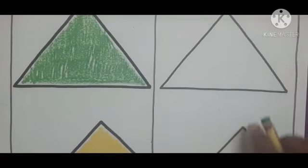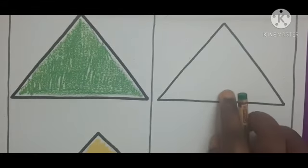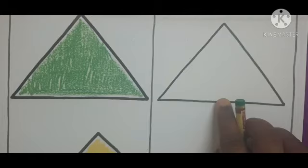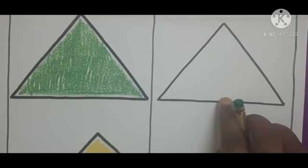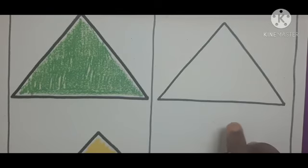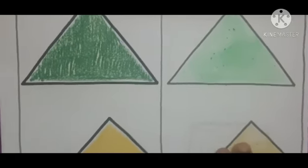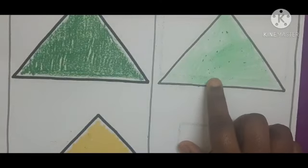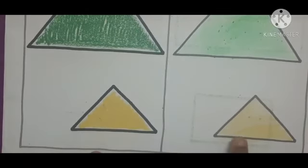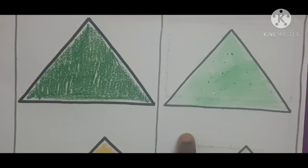See these pictures, children. What is the shape? Triangle. All of you complete page number 3. What is our assignment today? Color page number 3 and post your picture in WhatsApp. All of you start coloring. For big triangle, you have to color green. For small, it's yellow. Complete your assignment and share it. Thank you, children.